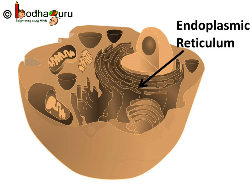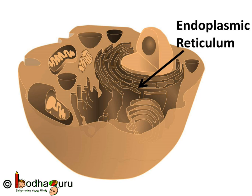But it is made of flattened tube-like or sheet-like structures which create this network. So it looks like long tubules or round or oblong sacs. They are called cisternae.